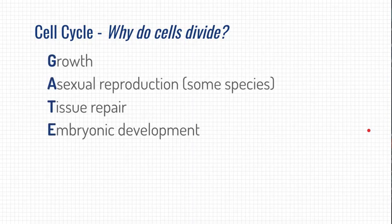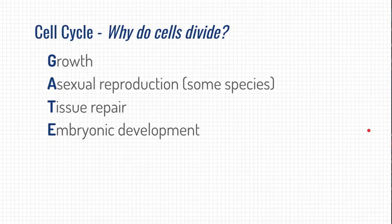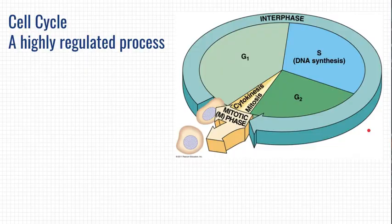Remember the reasons for cells to divide: growth, as organisms get bigger; for unicellular organisms, this is how they reproduce asexually; any kind of injury where we want to repair that tissue, or tissue that's old and worn out that needs replacing with new cells; and embryonic development — a fertilized egg develops into an entire organism because of cell division. It makes sense that we would really want this process to be regulated, because any kind of mistake in cell division could have catastrophic consequences for the organism.